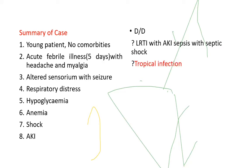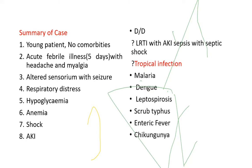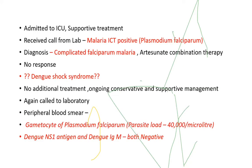Tropical infection differentials included malaria, dengue, leptospirosis, scrub typhus, enteric fever, and chikungunya. The patient was admitted to ICU and started on supportive treatment. A call was received from the lab that malaria ICT for falciparum was positive, so a diagnosis of complicated falciparum malaria was made and artemisinin combination therapy was started. However, there was no response to treatment.